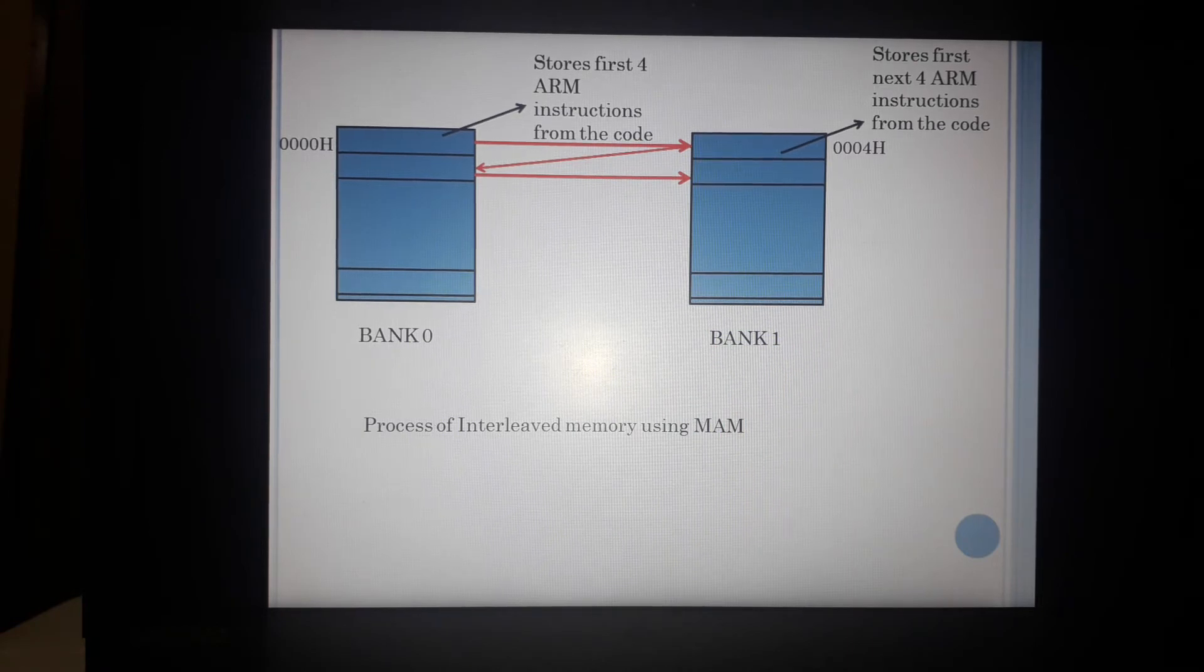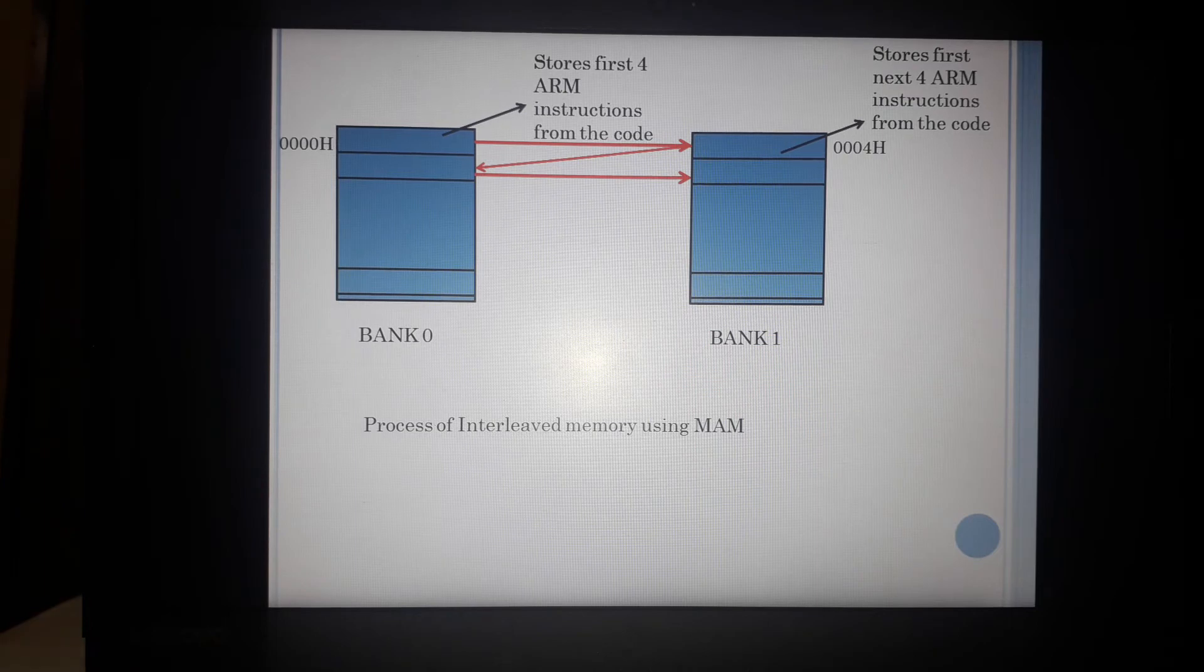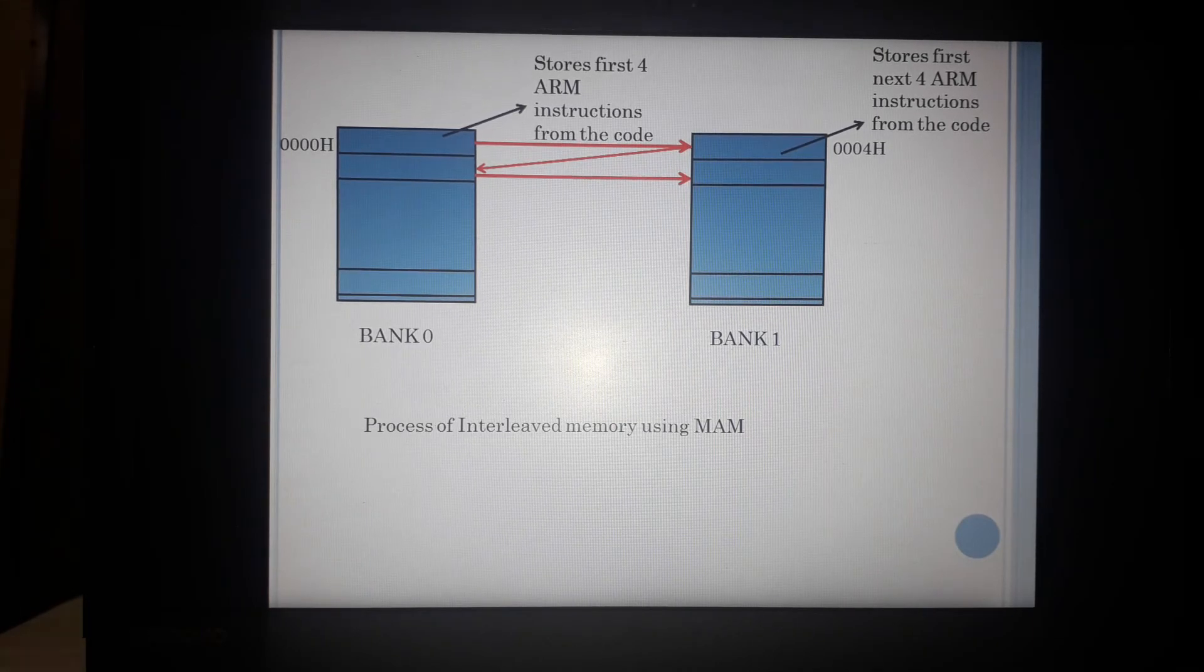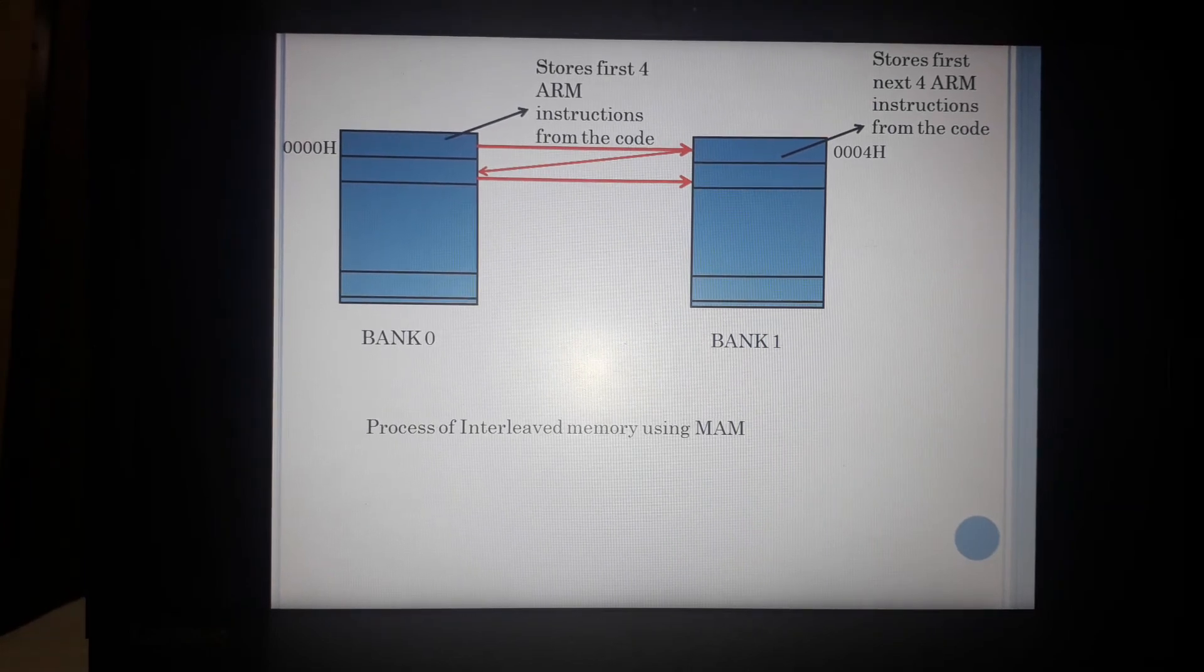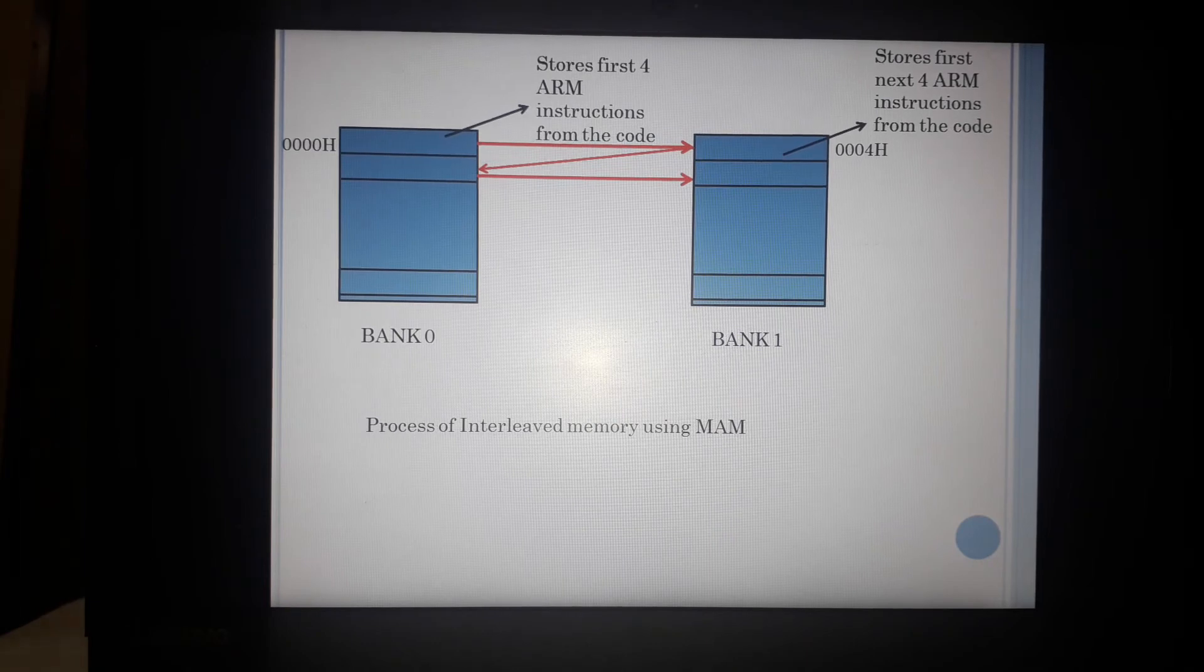Now when these are executing, my next 4 instructions of the program, they would be prefetched by the address bus of bank 1 and they would be kept ready for execution. So this way, I don't have to wait for my buses to first complete the execution and then fetch the instruction from the next address. And memory accelerator module is providing these fetched instructions to the processor.